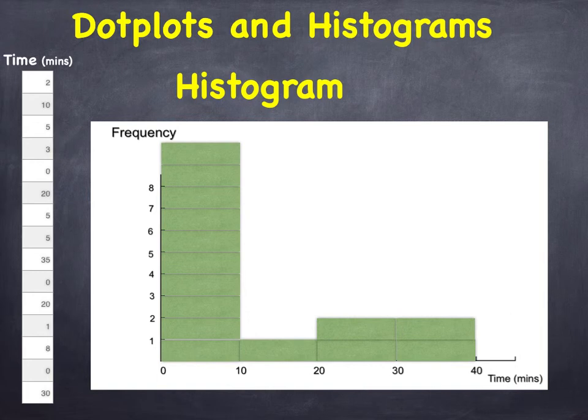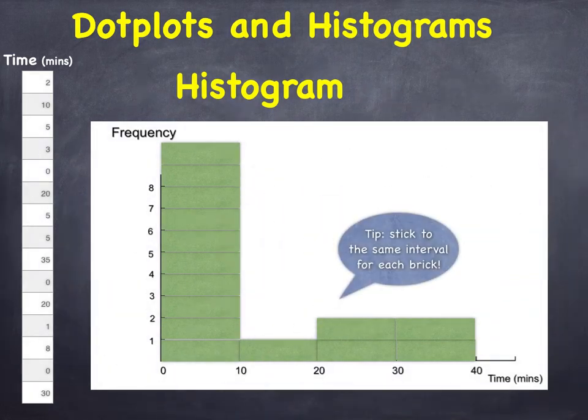And by the way, a feature of this histogram is that once I had chosen the width of the brick, I stuck with this width throughout. And the same thing was true with the previous histogram, where all the bricks were 5 units wide. At a more advanced level, you may come across histograms with columns of different widths. But that does introduce complications. So, here's a tip. When you're drawing a histogram, keep things simple and stick to the same interval for each brick.